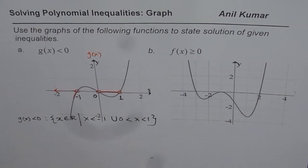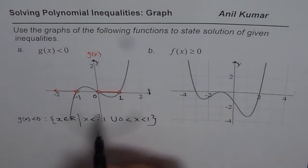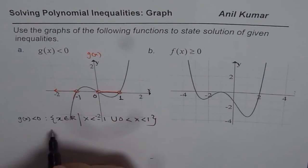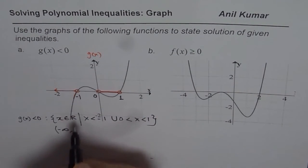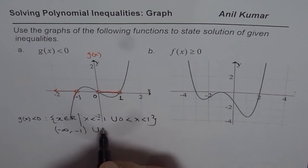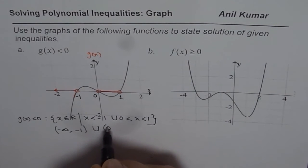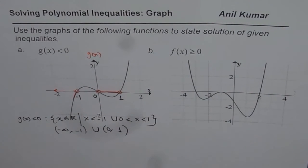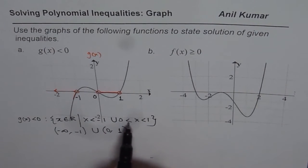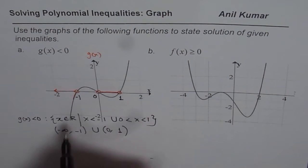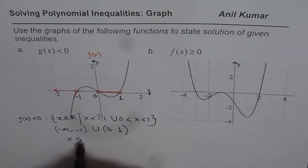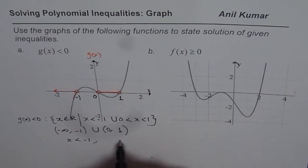So that is one way of writing the solution. The other way is you could write as from minus infinity to minus 1, both not included, union, and then we could write this as from 0 to 1, both not included.